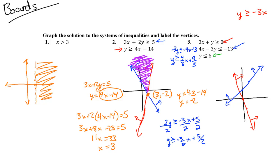The green inequality is y ≤ 6. We graph y = 6 as a horizontal solid line and shade below it. Now can you see where the red, blue, and green regions all meet? That triangular overlapping region in the middle is the solution. Be careful — sometimes textbooks place the region outside the obvious triangle, not always inside it.